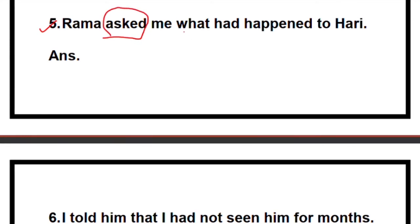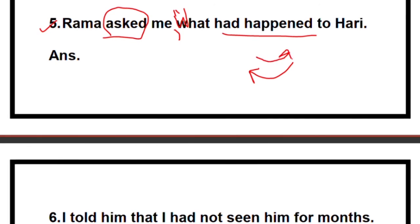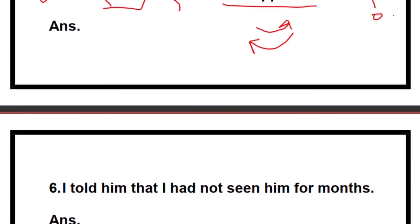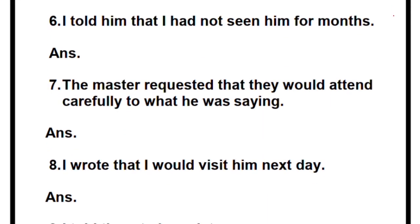Number five: 'Ramah asked me' — change 'asked' to 'said to': 'Ramah said to me,' add a comma, open the quotes. This is also a WH question, so write in capital letter: 'What.' 'Had happened' is past perfect — change it back to present perfect: 'has happened' (since 'hurry' is singular). So: 'What has happened to hurry?' End with a question mark, then close the quotes.